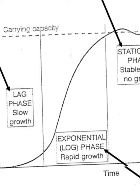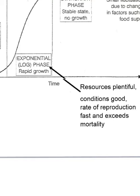Phase two: the period of rapid growth, or the exponential or log phase. This is where the number of breeding individuals increases and the total population multiplies exponentially. No constraints act to limit the population explosion. This is the state that the human population is in at the moment — we are increasing exponentially, and this will run out one day. In the exponential phase, resources are plentiful, so breeding increases exponentially. Conditions are good and the rate of reproduction fast outweighs mortality.